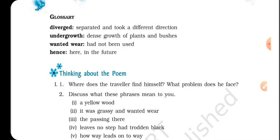The next is 'undergrowth.' Undergrowth means dense growth of plants and bushes, like in a jungle. In a jungle there is dense growth of plants and bushes. The roads were there and on the sides of the road, the undergrowth was there, because the roads have very less grass on them. Why? Because people walk on them — that's why no trees or plants can grow.